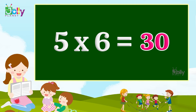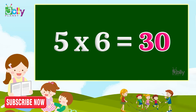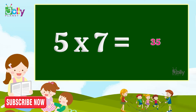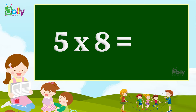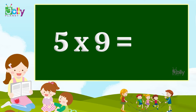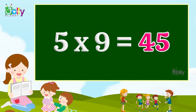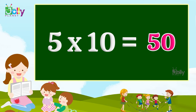Five six's are thirty. Five seven's are thirty-five. Five eight's are forty. Five nine's are forty-five. Five ten's are fifty.